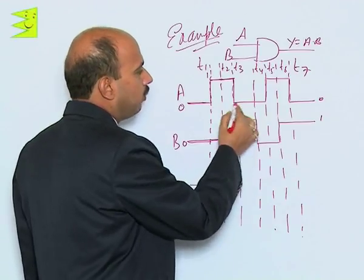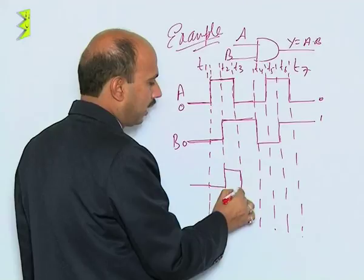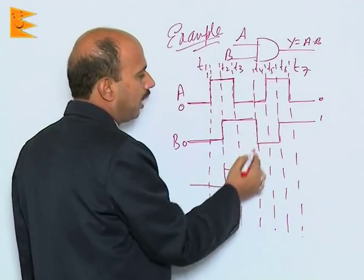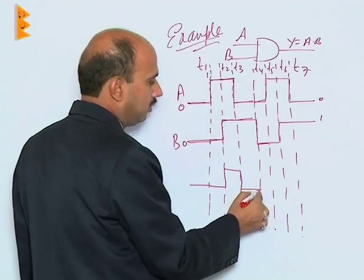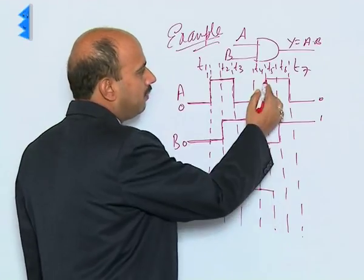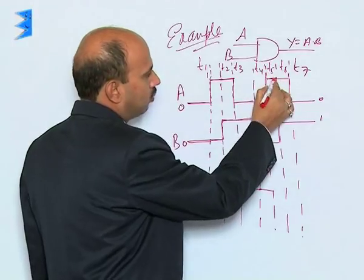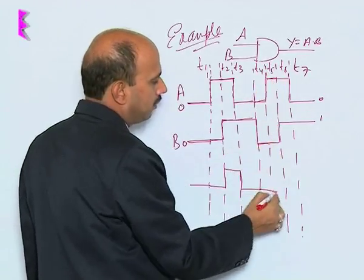Between T3 and T4 this is 0, this is 1, so again it is 0. Between T4 and T5 this is 0 and this is 0, again it is 0. Between T4 and T5 here this is 1 and this is 0, again it will be 0.